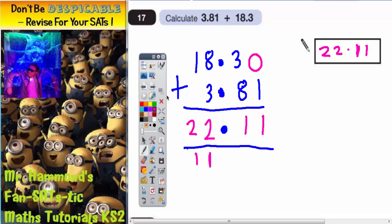You could actually have thought about this as money so 18.3 pounds is basically the same as saying 18.30 and this one would be 3.81 so your final answer is 22.11.